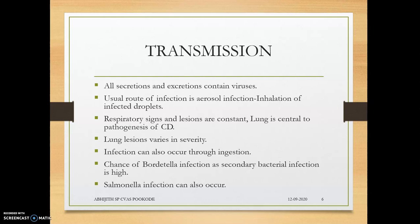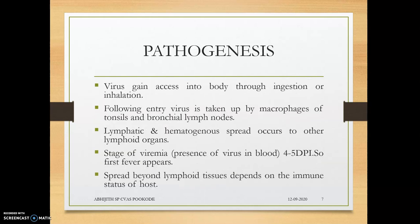Since it is a paramyxovirus, all secretions and excretions contain viral copies. The usual route of infection is aerosol — inhalation of infected droplets from an infected animal. Respiratory signs and lesions are constant, and the lung is central to pathogenesis due to pneumonia formation. Infection can also occur through ingestion. The chance of secondary Bordetella infection causing kennel cough and Salmonella infection increasing GI problems is very high.